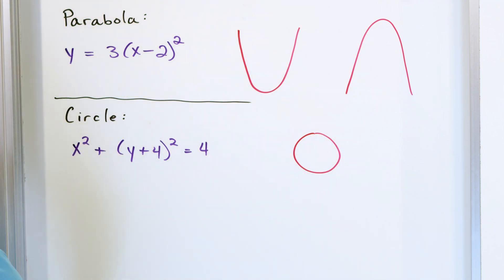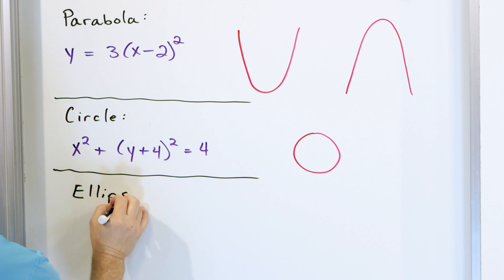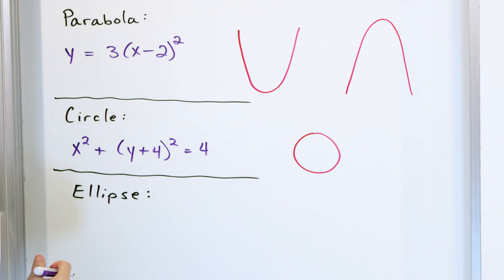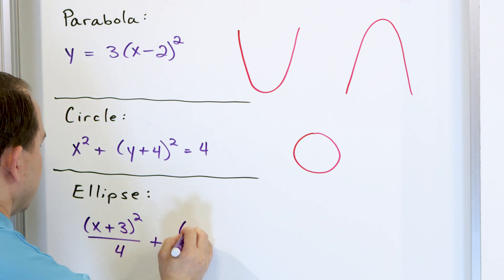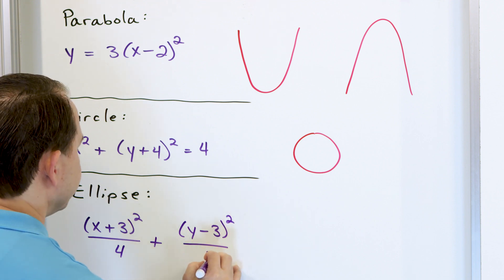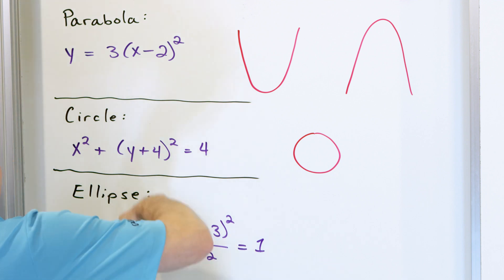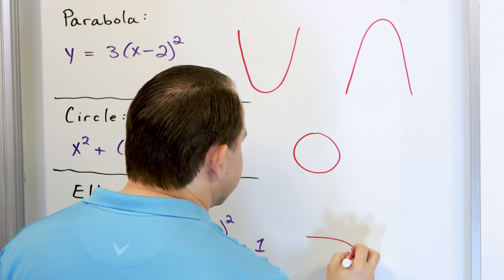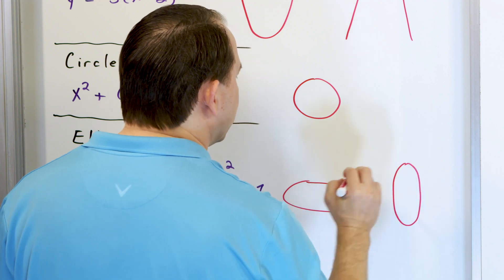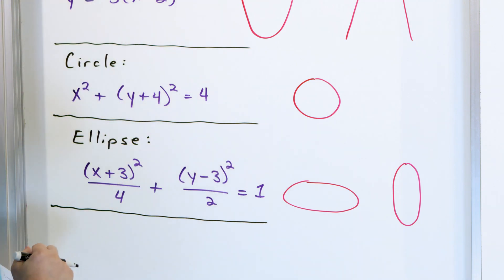After a circle, we studied an ellipse, which is very similar — it's just a stretched version. An example equation might be (x + 3)²/4 + (y − 3)²/2 = 1. You have an x² term plus a y² term, with numbers on the bottom that determine how it's stretched, and the right-hand side equals 1. You can have horizontal ellipses or vertically oriented ellipses depending on those bottom numbers.